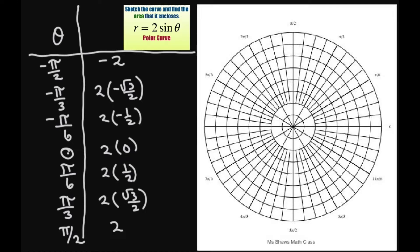At negative pi over 2, that's at negative 2. So I'm going to go by 2. So this is going to be 1 and this is going to be 2. So we're at here. So each circle is like 1 half.